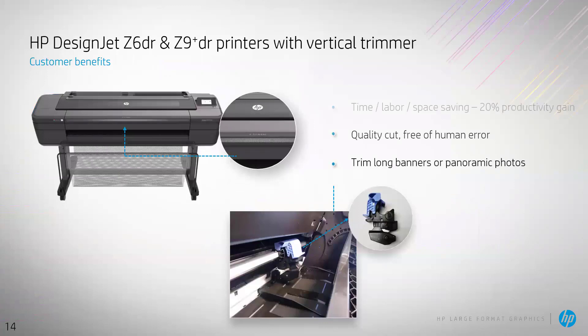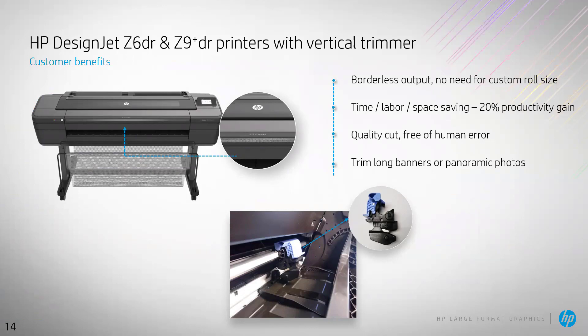The vertical trimmer is a big benefit for customers doing posters, roll-up banners, panoramic photos, or Application Center bleed images that have no border. Normally you'd have to manually trim the white edge, but with the vertical trimmer — enabled on our dual-roll printers — you can do borderless printing directly from the printer. Whether using HP Click or the driver, submit the file and the printer cuts it for you, saving time, labor, and errors. It's a unique advantage only HP has today.